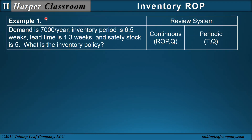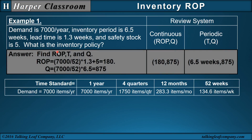Example 1: demand is 7,000 items a year, inventory period 6.5 weeks, lead time 1.3 weeks, safety stock is 5. For ROP, since our lead time is in weeks, we convert demand from years to weeks by dividing by 52, then add safety stock, giving an ROP of 180.